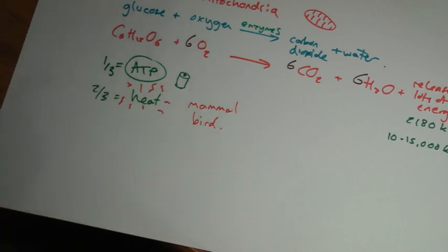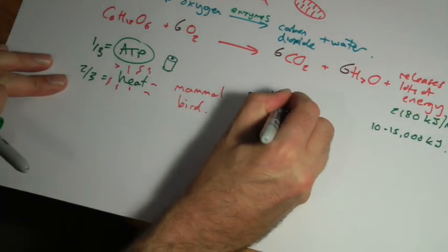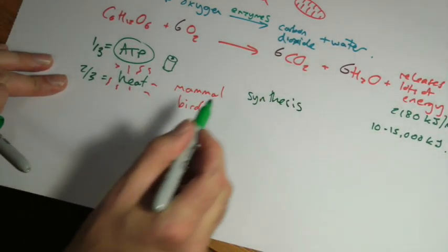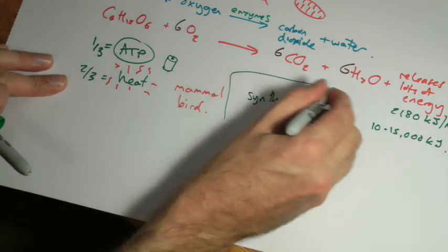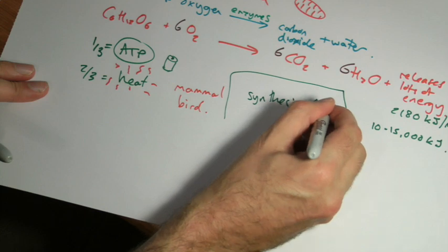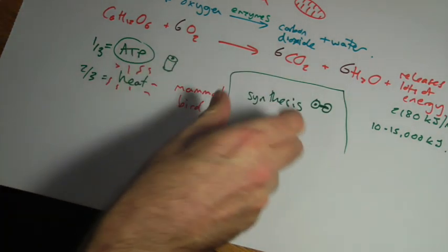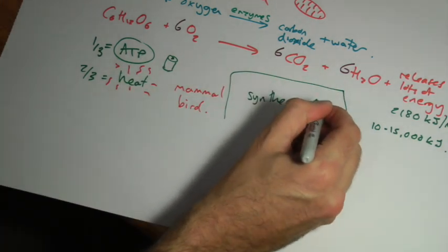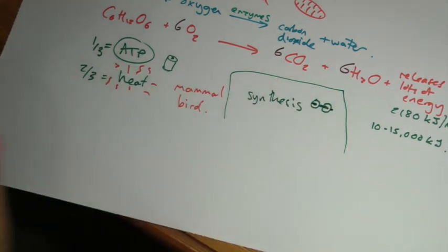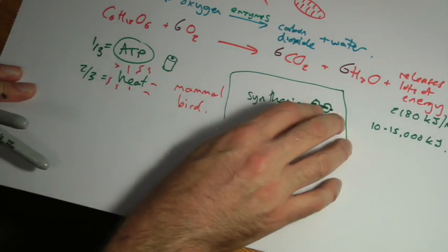What do we use this stuff for? Basically, making new molecules, which we'll call synthesis. It's a simple way of thinking of that. Let's say you went to the gym and you lifted loads of weights to get your muscles bigger. You've got to make new muscle tissue. That's meant to be a barbell. So you'd need to build new muscle tissue, and you need the energy released from food in order to do that.